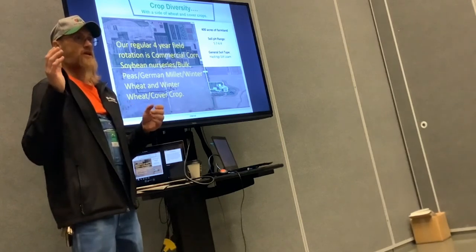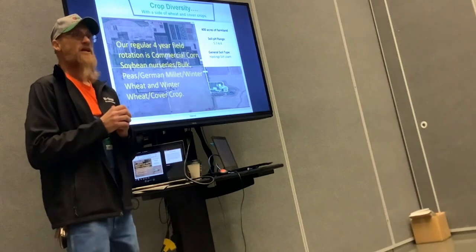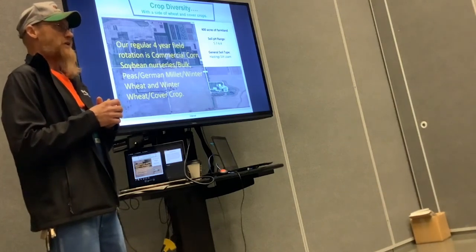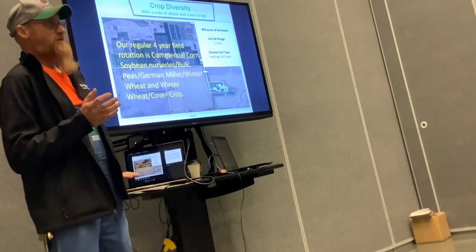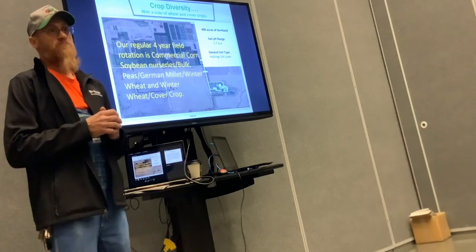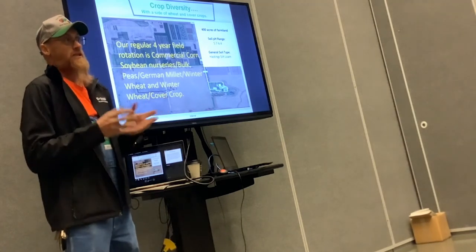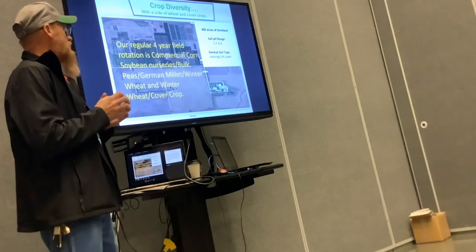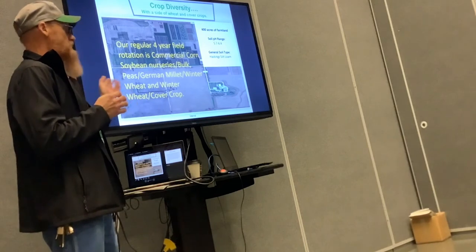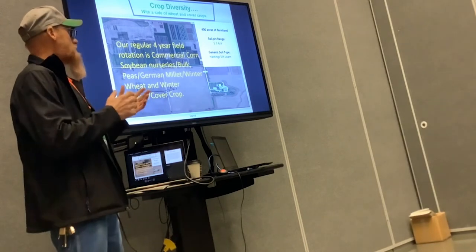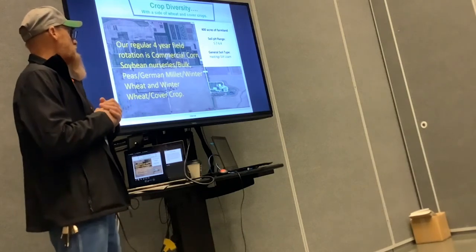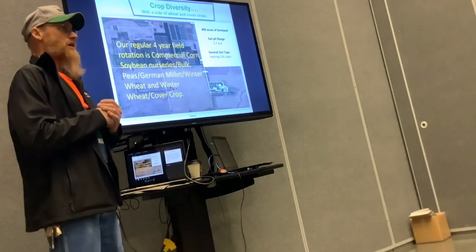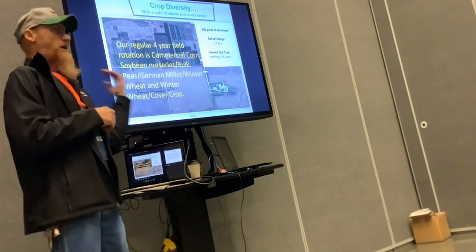We have 400 acres of land. The building site is in the middle with plots on both sides. Each crop uses up another 80 acres. All the 80s are linear irrigated. Our four year rotation is commercial corn, soybean nurseries and bulk soybeans in 180 acres, and then another 80 will be peas, German millet, then we'll plant it to winter wheat that fall.